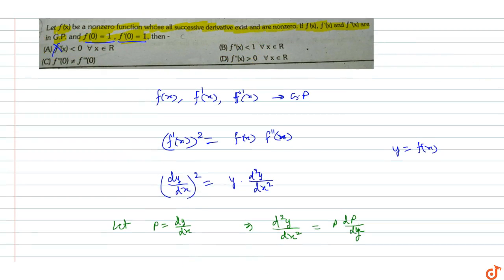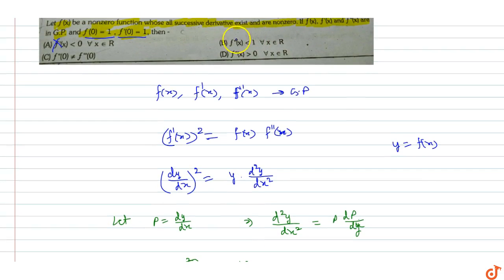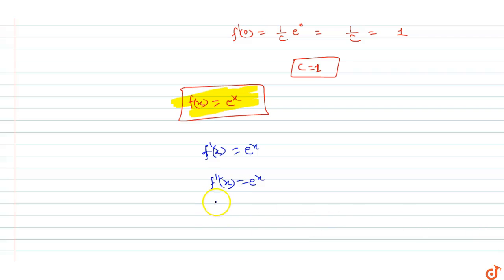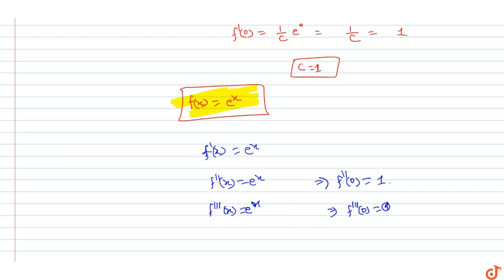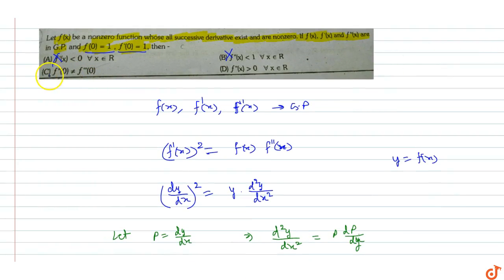Option B says f'(x) < 1, but f'(x) = e^x is greater than 0 and can exceed 1, so option B is also incorrect. For option C, f'(0) and f''(0): both equal 1 since f'(x) = e^x gives f'(0) = 1 and f''(0) = 1, so they are equal — but option C says not equal, making option C also incorrect.